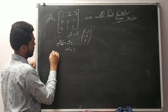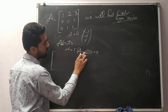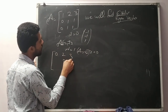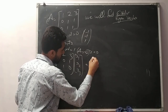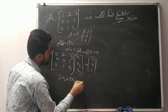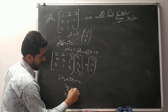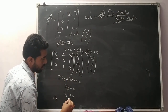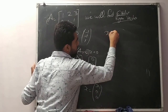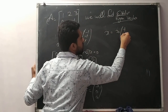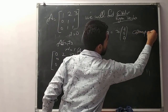For lambda equal to 1, (A minus lambda I) x equals 0. After simplification I get the matrix [0, 2, 3 / 1, 1, 0 / 0, 0, 0] times [x1, x2, x3] equals 0. This gives 2x2 plus 3x3 equals 0 and x3 equals 0, so x2 equals 0. The eigenvector for lambda equal to 1 is [1, 0, 0].